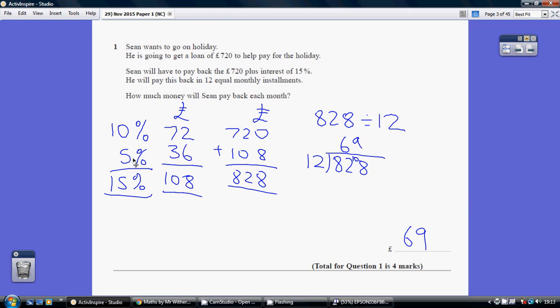Now 10% and 5% is 15%. 72 and 36 is £108. So Sean will have to pay back the 720 plus interest. So we have to add the interest onto the 720. 720 and 108 is £828.